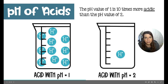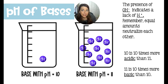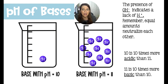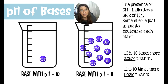When it comes to concentration and strength of acids and bases, we talk about the concentration of their respective ions. For acids, we're talking about hydrogen ions, and for bases, we're talking about hydroxide ions. When talking about bases, the presence of OH and the lack of hydrogen ions is what really makes it a base. So a pH of 10 versus a pH of 11: you're going to have 10 times as much hydroxide ions — or really 10 times fewer hydrogen ions. A pH of 10 is 10 times more acidic than 11, but 11 is 10 times more basic than 10.